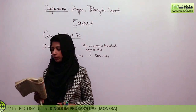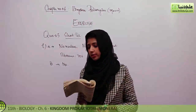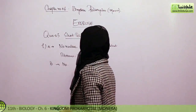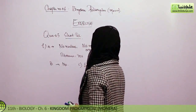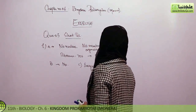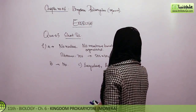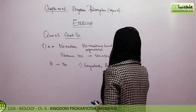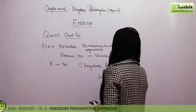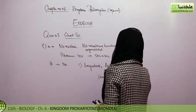Third question: in what habitats do bacteria live, and give some general means by which bacteria derive nutrients. Bacteria are found everywhere. The general mechanisms by which they derive nutrients include autotrophy — both chemosynthesis and photosynthesis.